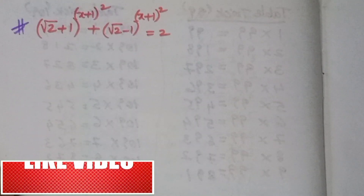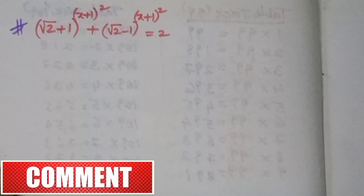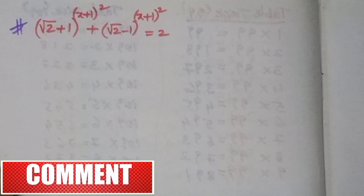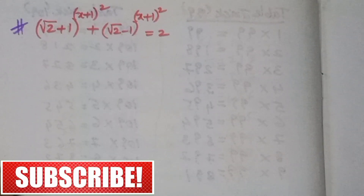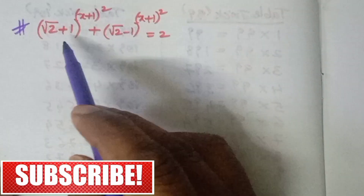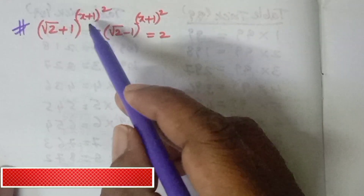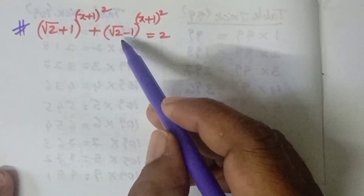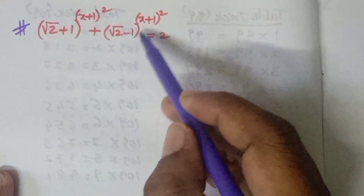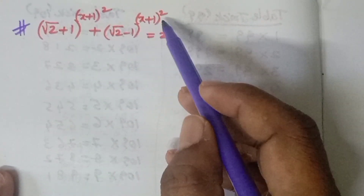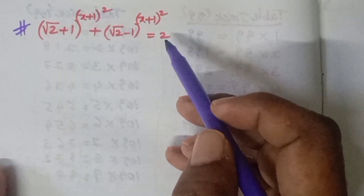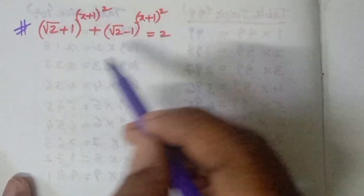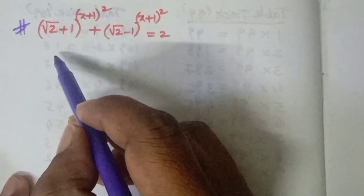The question is given like this: (√3+1)^((x+1)²) + (√2-1)^((x+1)²) = 2. We have to solve it.